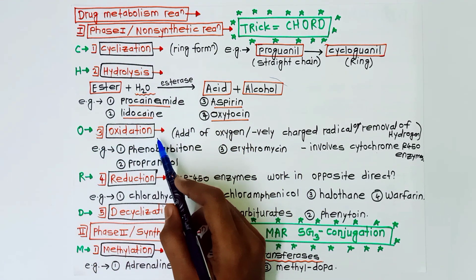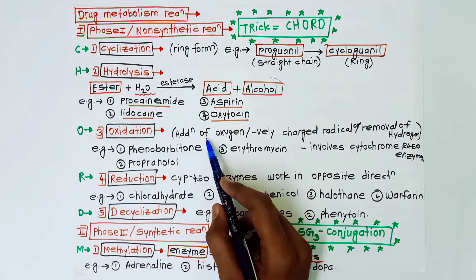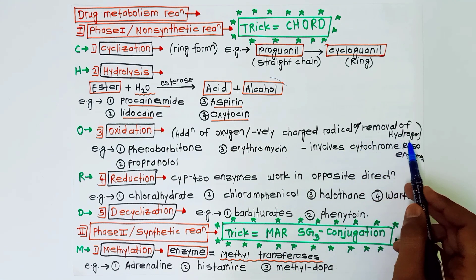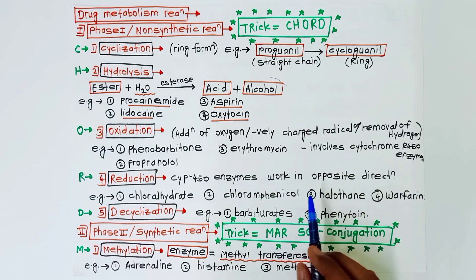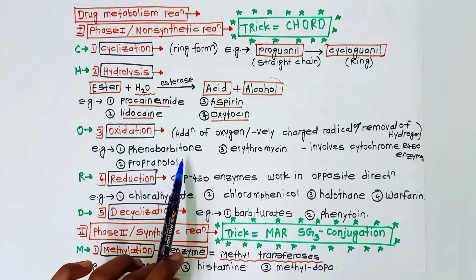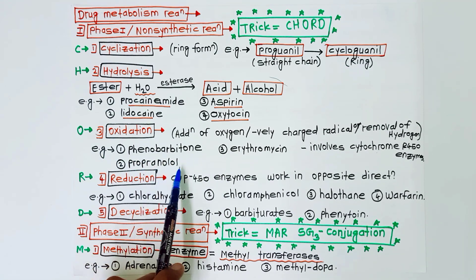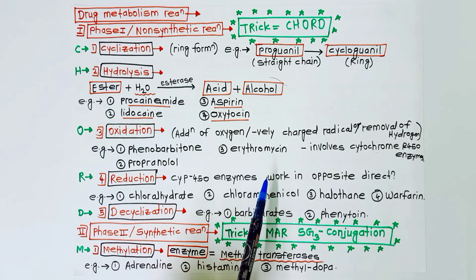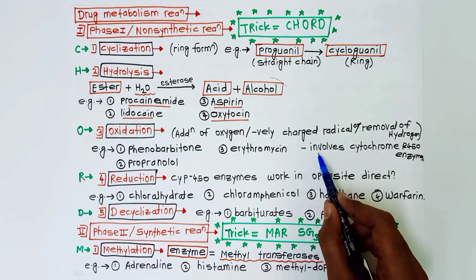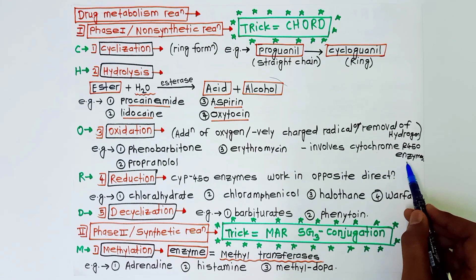O for oxidation - it is nothing but addition of oxygen or negatively charged radical, or removal of hydrogen, or removal of positively charged radical. Examples of oxidation are phenobarbitone, propranolol, erythromycin. And in this reaction, oxidation reaction, it involves the enzyme cytochrome P450 enzymes.